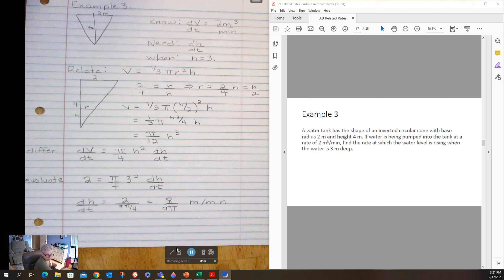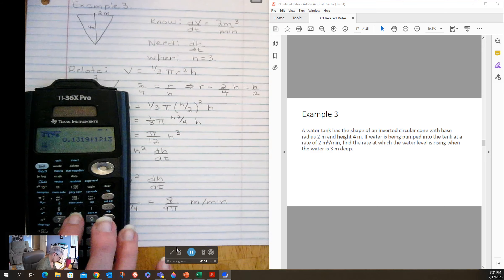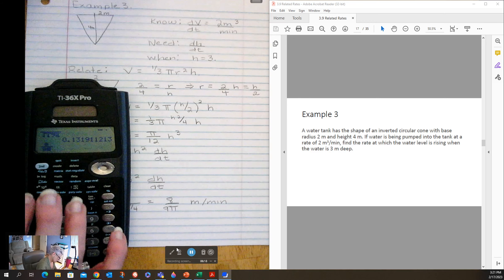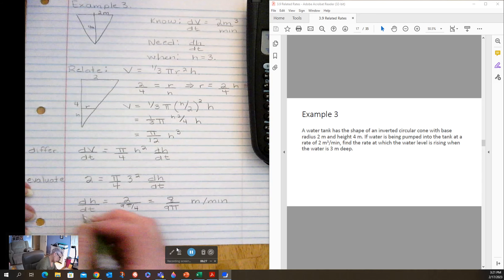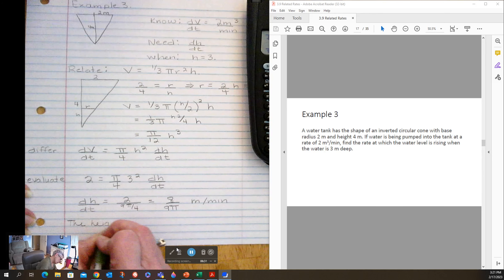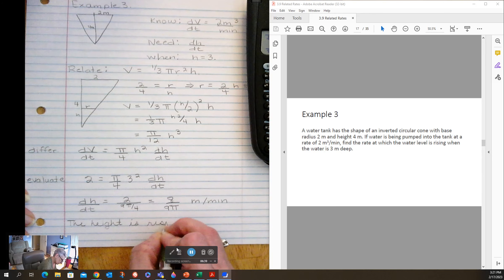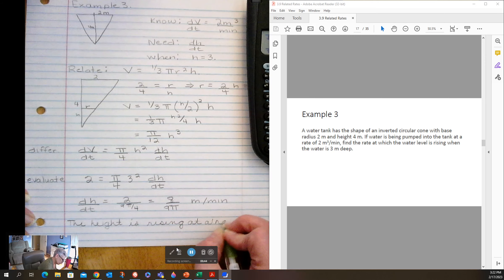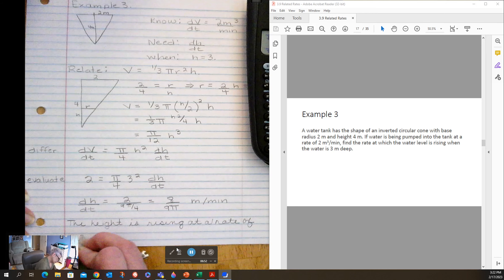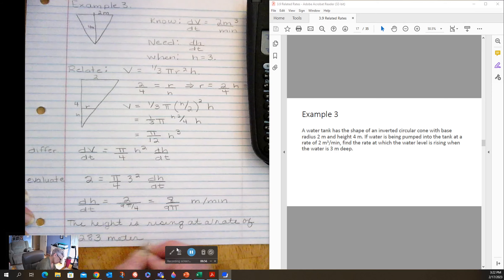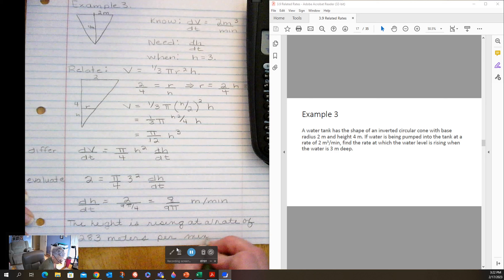And this would be meters per minute. And of course when we're writing our sentence, we would want to plug that in the calculator. So again, I'm going to use my fraction bar: eight over nine pi gives me about 0.283. So the height is increasing or the water level is rising at a rate of about 0.283 meters per minute. Easy enough.